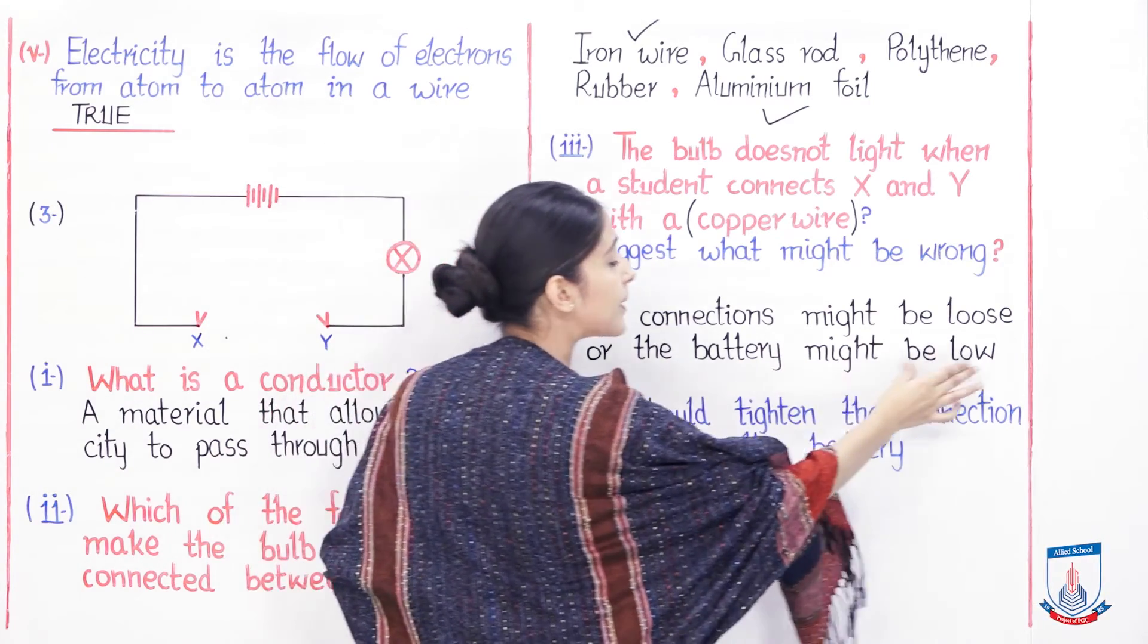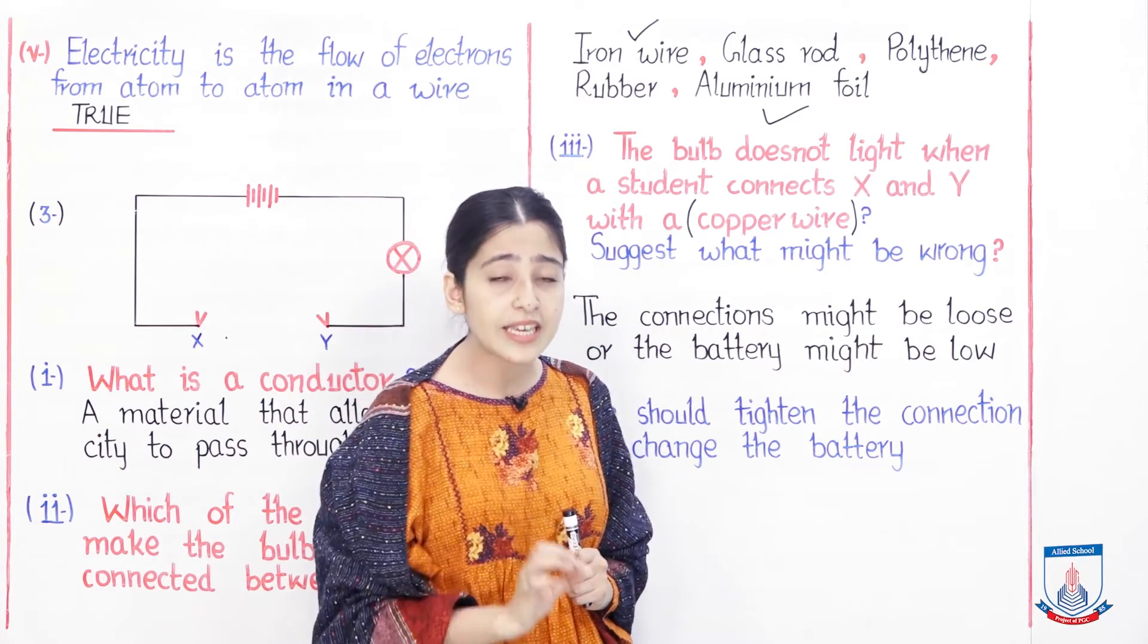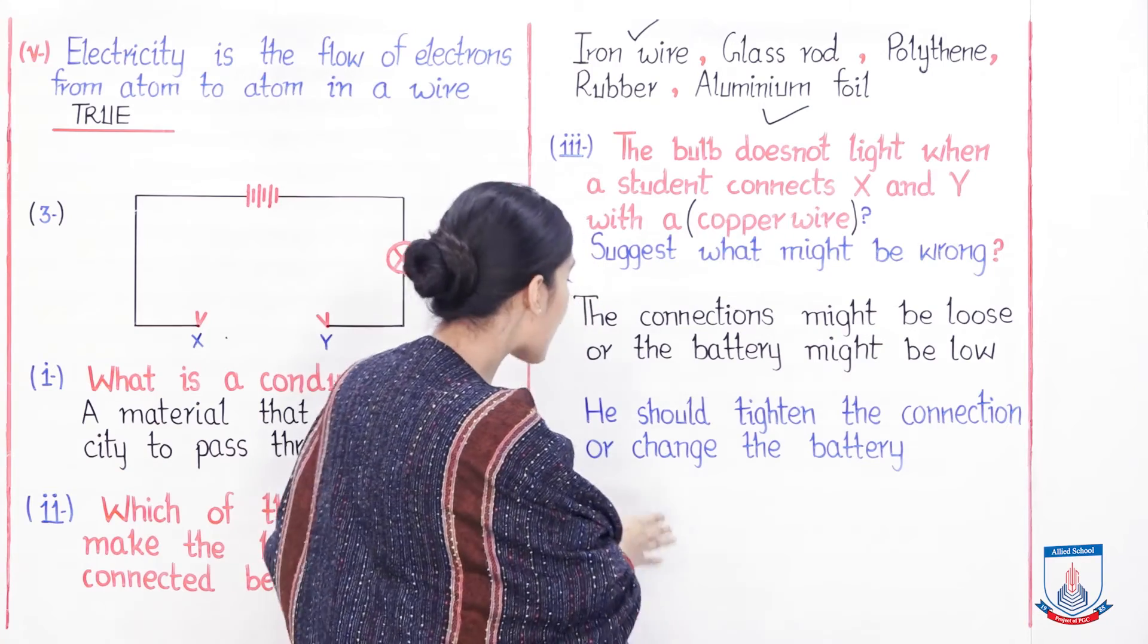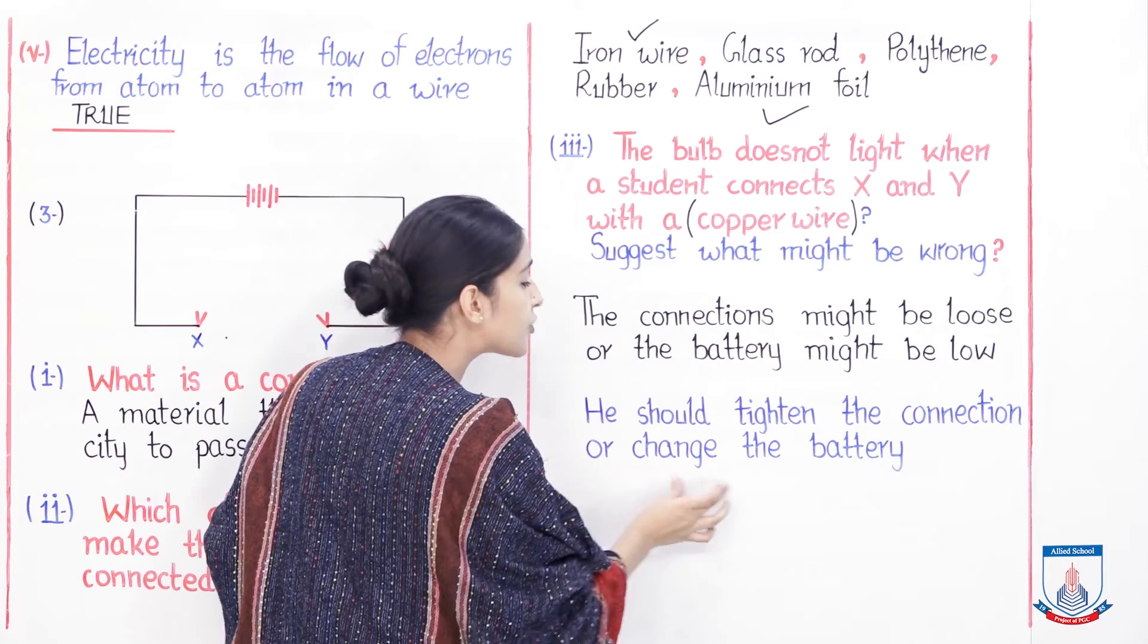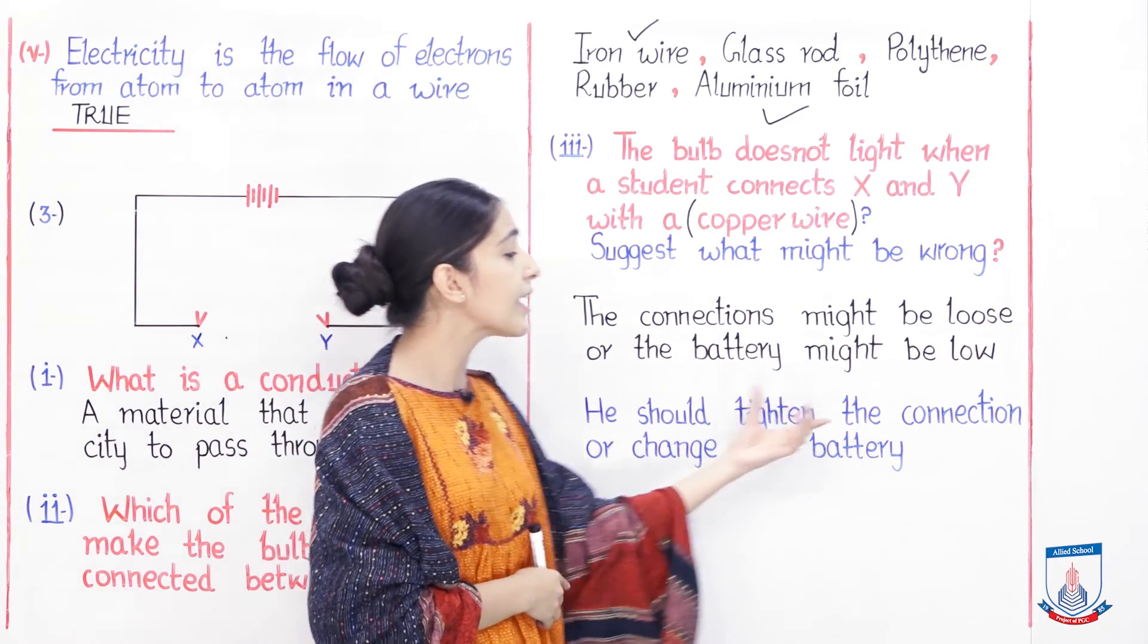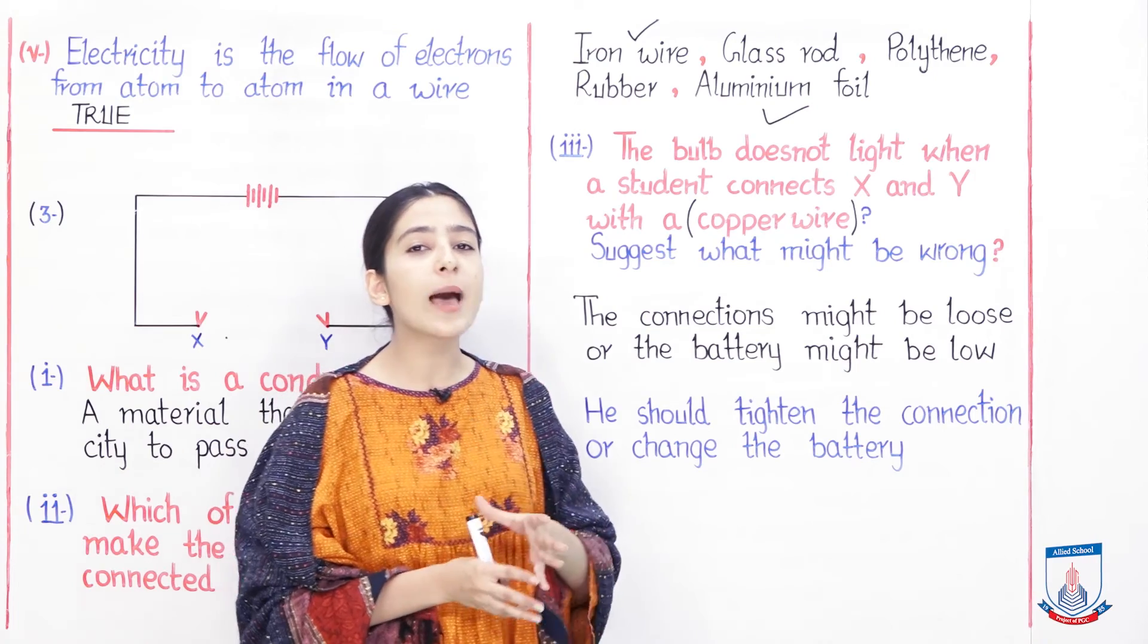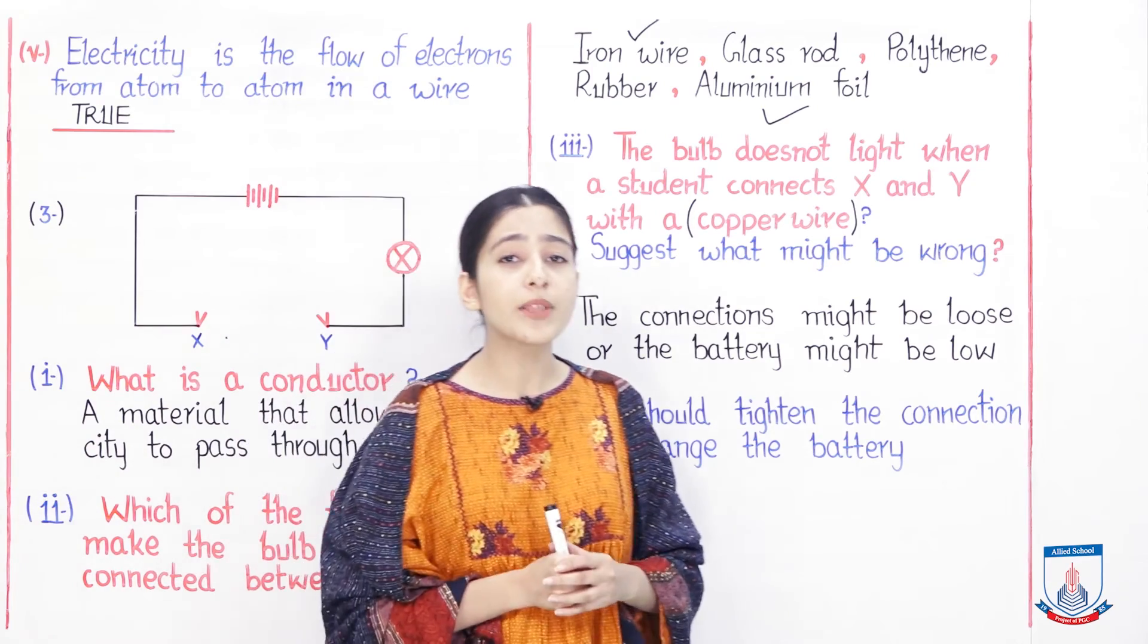The connections might be loose. Yeh jo connections hain X aur Y, ho sakta hai ke ye connections loose hon. Jab us student ne copper wire ke saath switch ko connect kiya, ho sakta hai ke usne loosely connect kiya ho. Agar woh usko tight kar de, toh hamara lamp jal sakta hai. Second is, the battery might be low. Ho sakta hai ke yeh battery low ho, tab hi hamara lamp jo hai woh light nahi kar raha. Toh kya ho sakta hai - he should tighten the connections or change the battery. Ho sakta hai ke yeh do amal karne se uska jo apparatus hai, circuit jo hai woh kaam karna shuru ho jaye aur jo lamp hai woh light ho jaye.